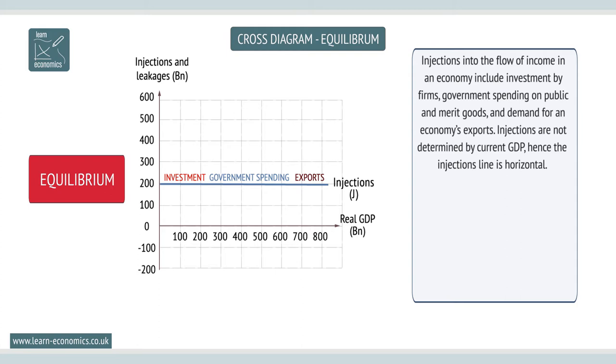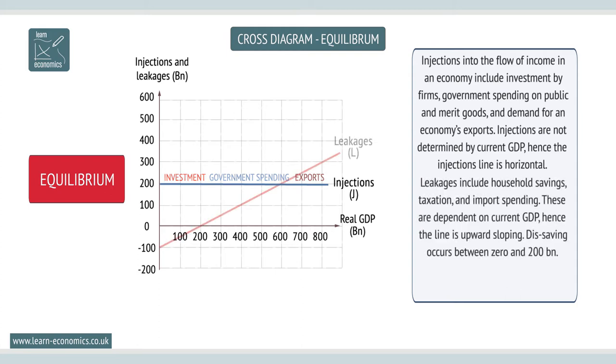Leakages include household savings, taxation, and import spending. These are dependent on current GDP, hence the line is upward sloping.